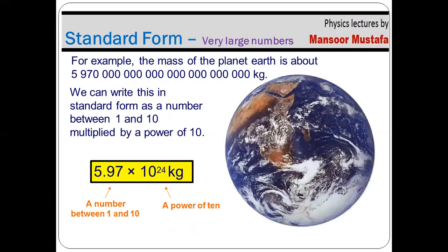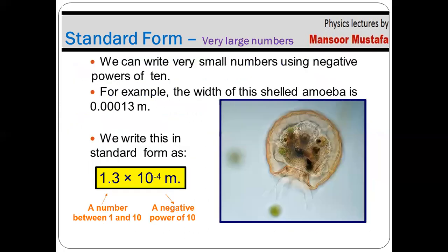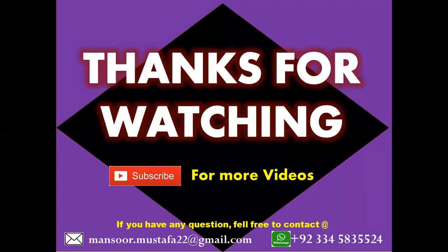Just like the mass of Earth mentioned at the start, which contained a large string of digits, that number is now converted into a smaller standard form — making it easy to write and memorize. Similarly, the width of the amoeba is converted into standard form. This is all about this lecture. If you have any query related to any topic in physics, you can contact me at my email address or WhatsApp number. Thank you.